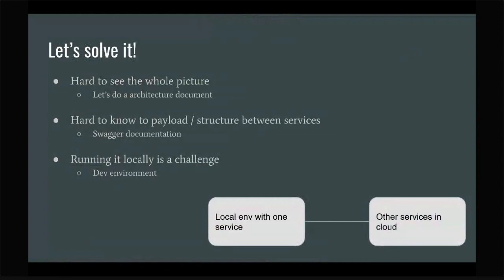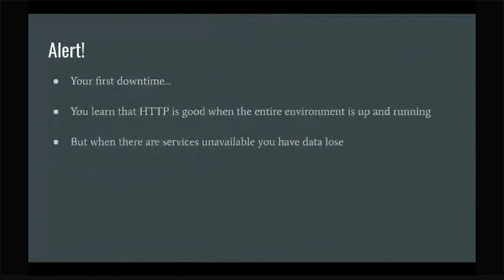So we've fixed those issues. We're a few months into microservices, and then for the first time we have a downtime — something doesn't work in production. I think this is actually a good thing, because you want to see your architecture and every decision you made working in production. And when it doesn't work, this is when you can start improvement. After you have significant traffic on your microservices architecture, you learn quickly that HTTP works great when everything is up and running.